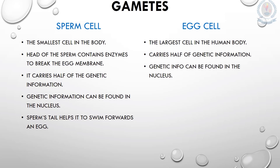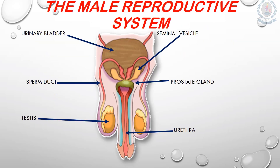The egg cell is the largest cell in the human body. The egg cell also contains half of the genetic information required to form an offspring. Like sperm cells, all the genetic information in the egg cell can be found in its nucleus.